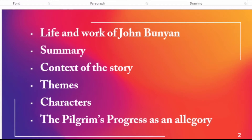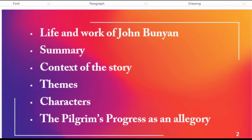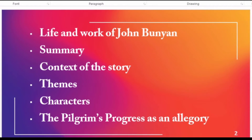In the first portion we will discuss the life and work of John Bunyan — when he was born, his age, and his major contribution to English literature. In the second portion we will discuss the summary of this book, covering the main events, incidents, and adventures of the story. In the third portion we will discuss the critical angle and the actual context of the story — what is the purpose of the writer.